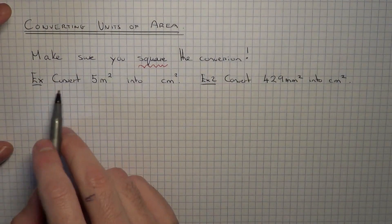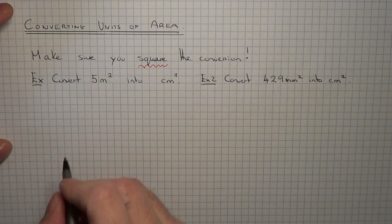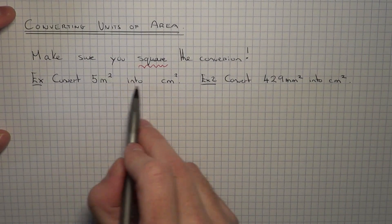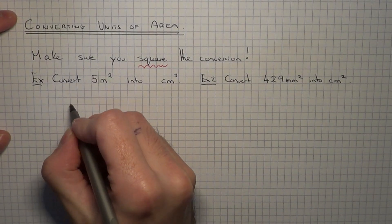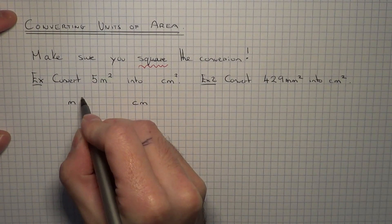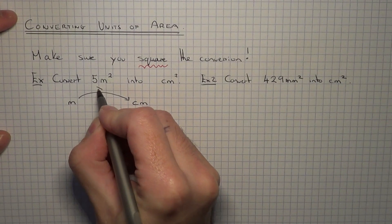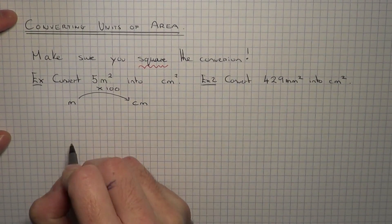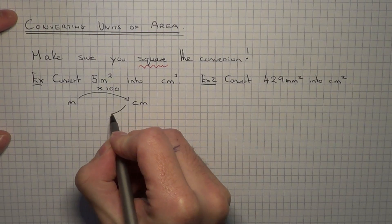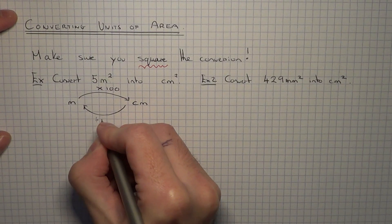So example 1: we've got to convert 5 metres squared into centimetres squared. This is a conversion between metres and centimetres. Normally, if it was metres to centimetres, you would multiply by 100 to get from metres into centimetres. Or going back from centimetres to metres, you'd divide by 100.